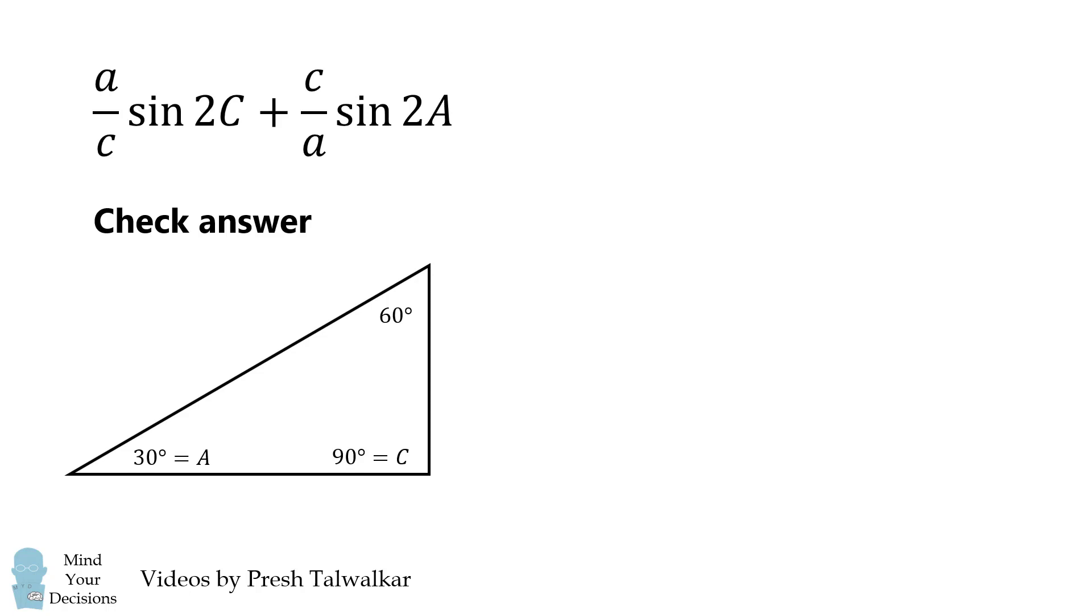The side opposite angle A will be equal to 1, and the side opposite angle C will be equal to 2. Technically the sides are in the ratio of 1 to 2, but we might as well just say they're 1 and 2, because we're checking our answer.